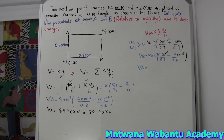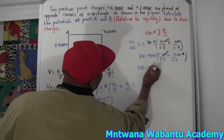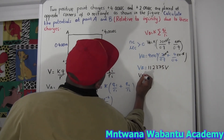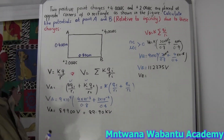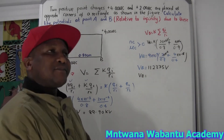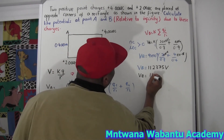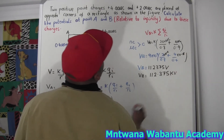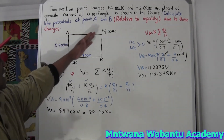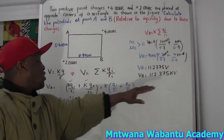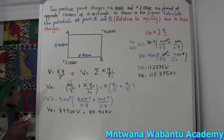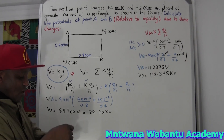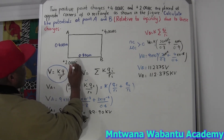Plugging into the calculator gives 112,375 volts. Dividing by 1000 gives V_B equals 112.375 kilovolts. So we have the potential at point A and the potential at point B. The formula for electric potential is V equals K times Q over R — also called electric potential.